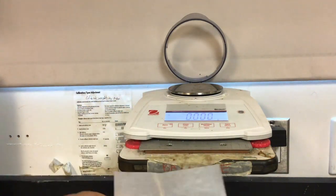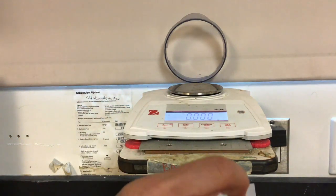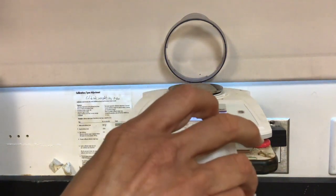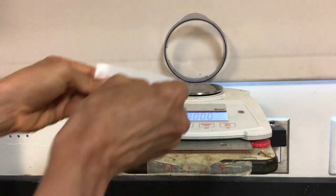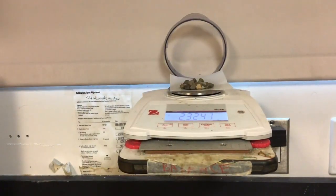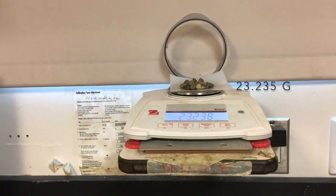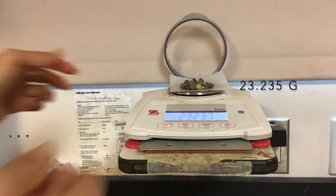When I pour some rocks in here, we want between 20 and 25 grams. I'm going to add some rocks to my paper and then get the mass of the paper plus the rocks. That's about 23.235 grams.